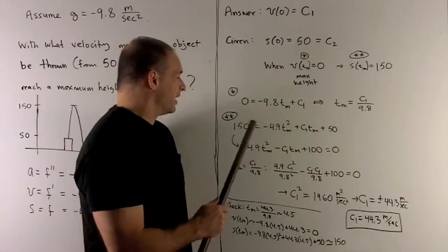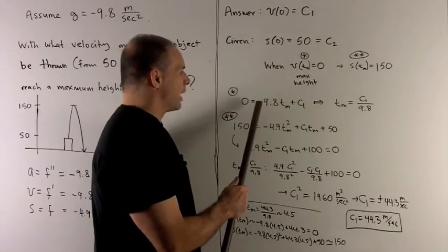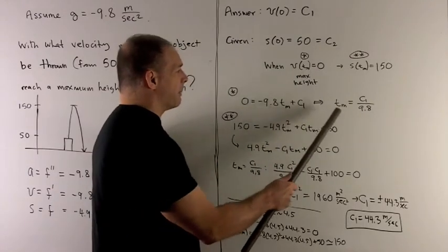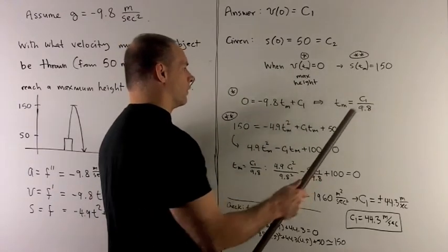Unraveling my first equation, that's going to say 0 = -9.8t_m + c1. But if I solve for t_m, I'm going to get c1 over 9.8.